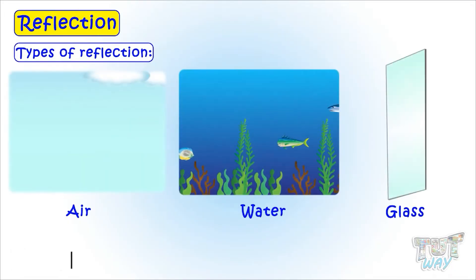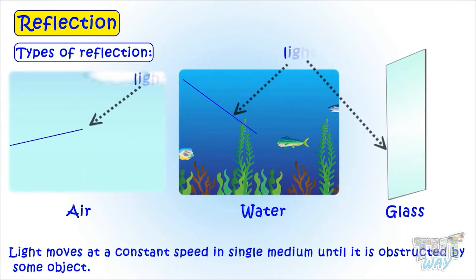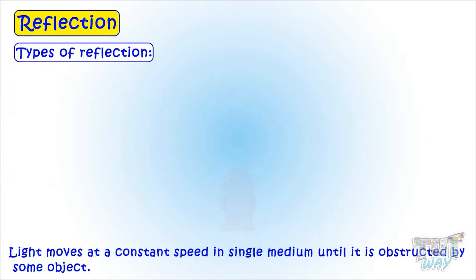We learned what is reflection and its types already. When light exists in a single medium, air or water or glass, it moves in a single straight line and at a constant speed until it is obstructed by some object.